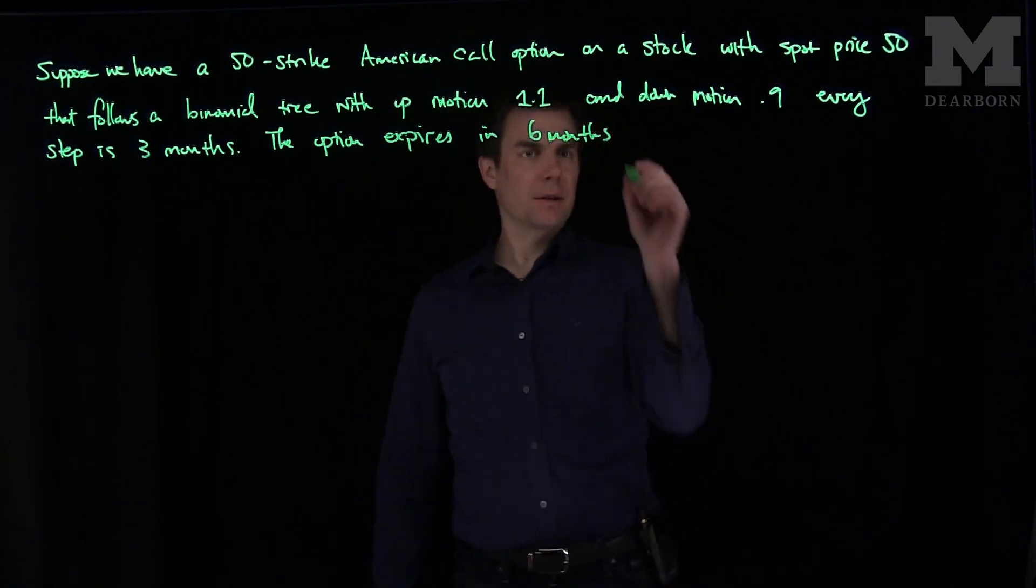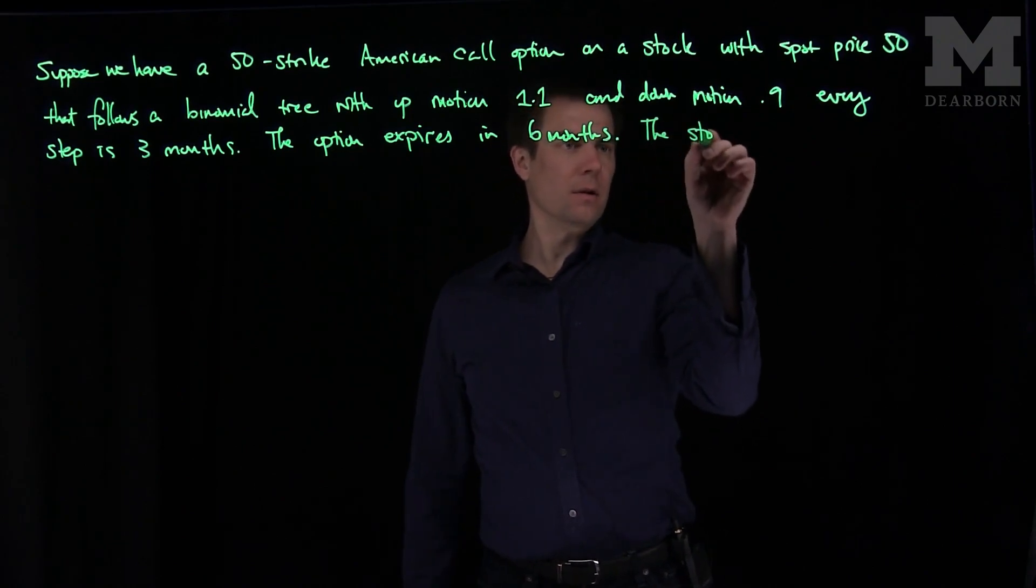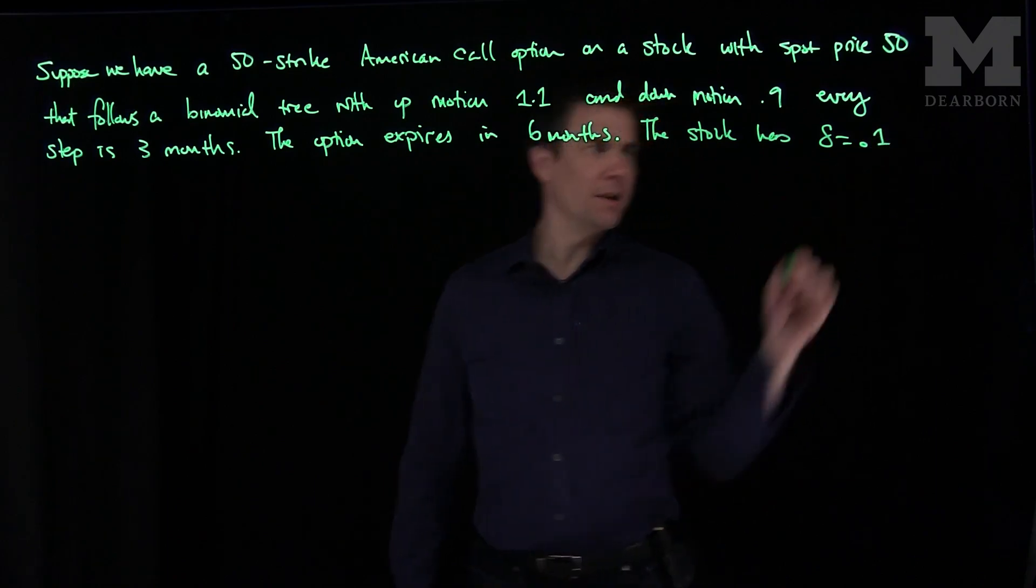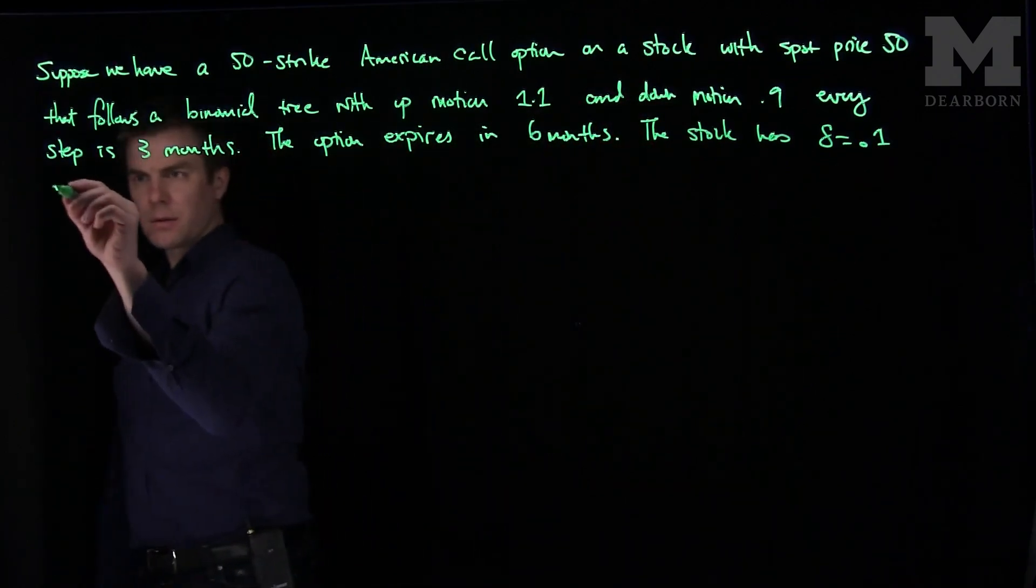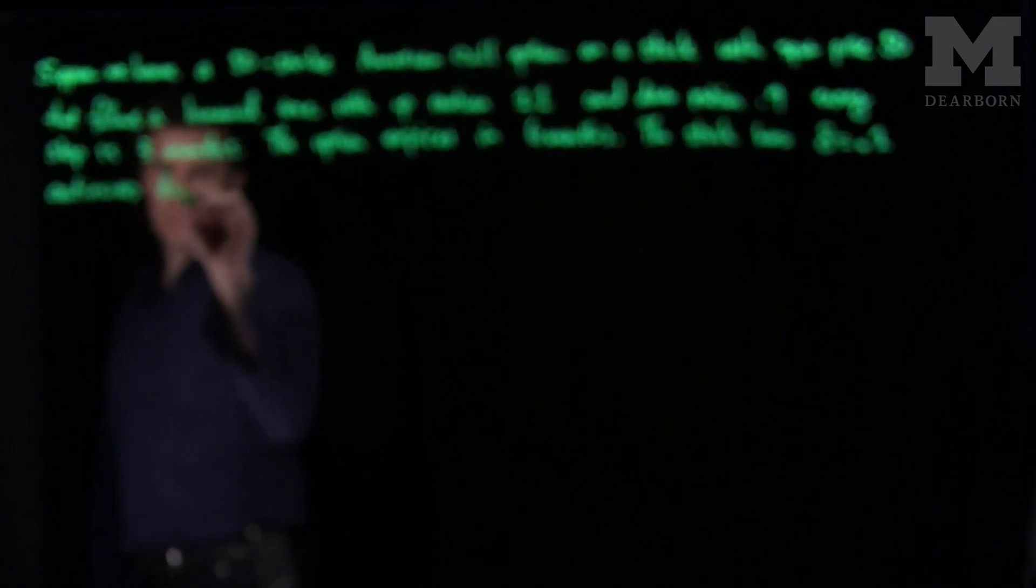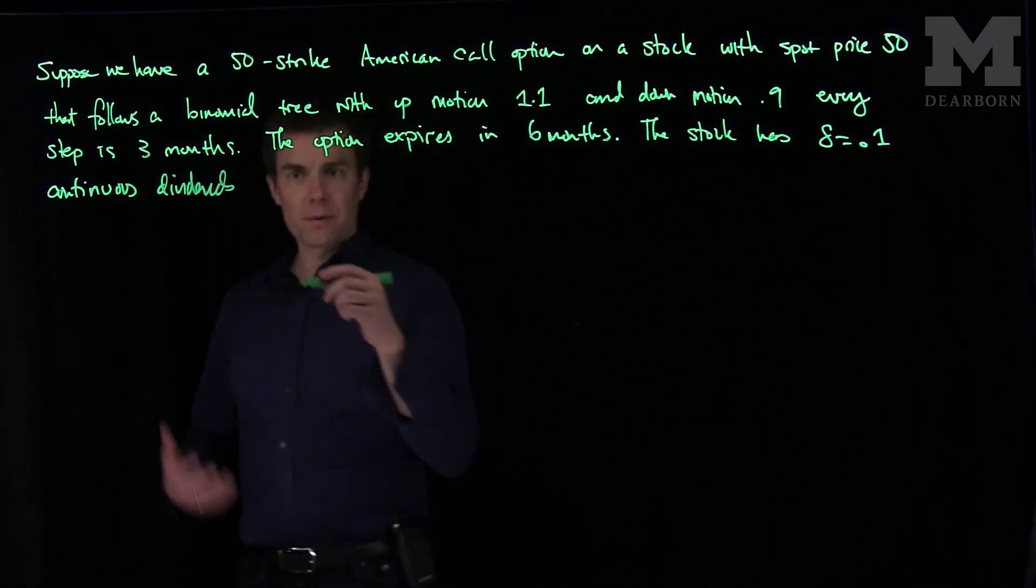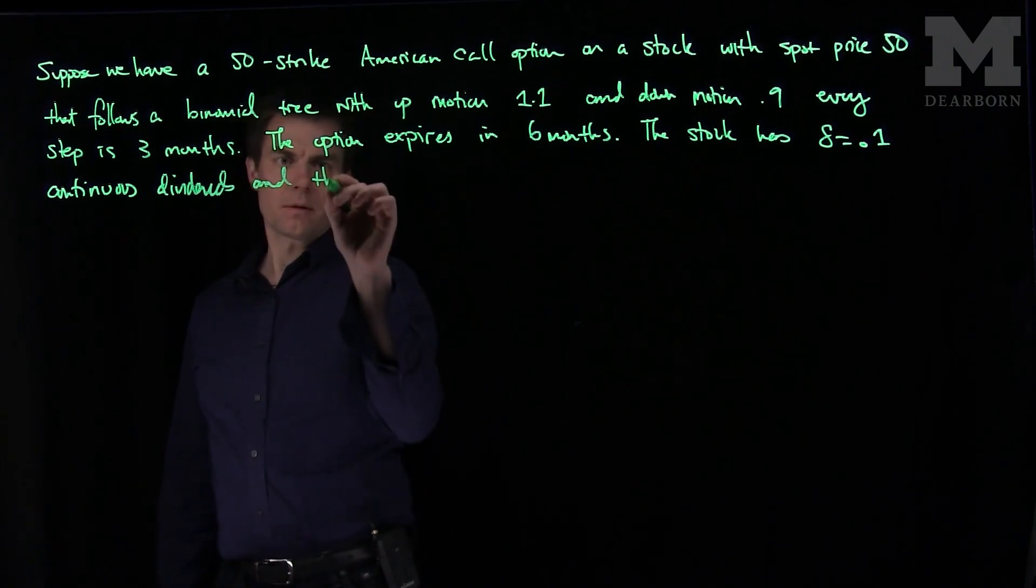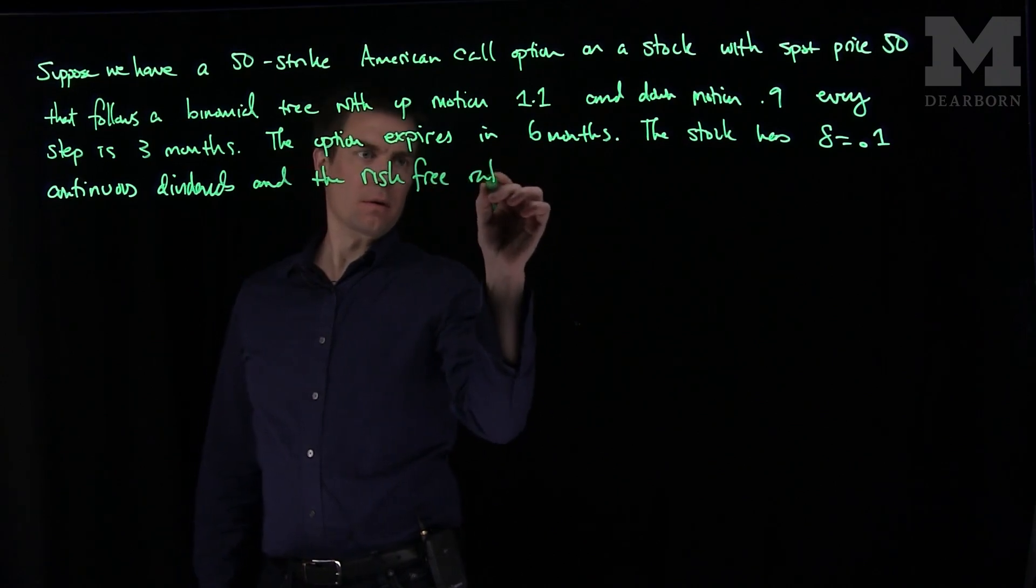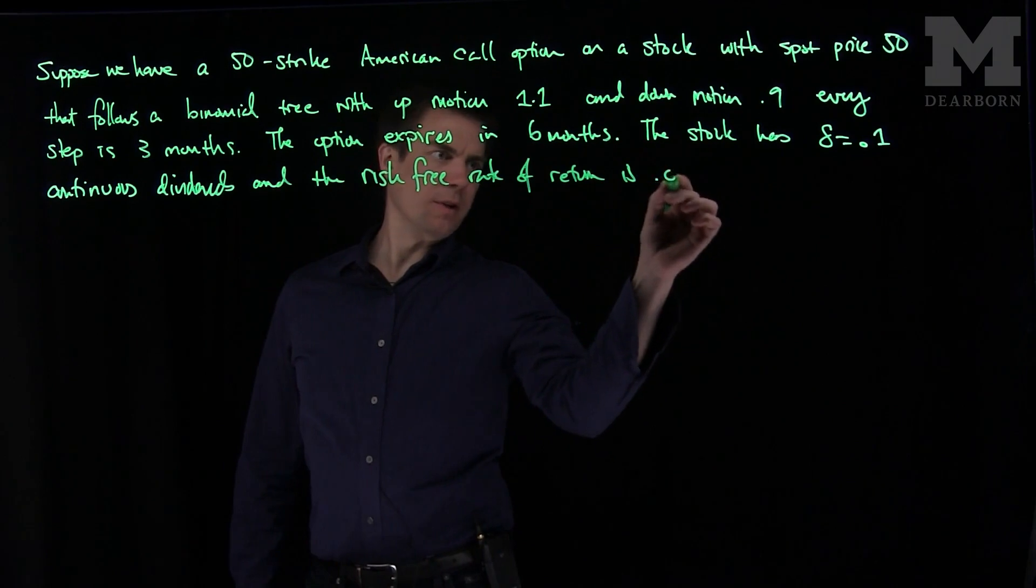The option expires in 6 months. The stock has delta equals 0.1 continuous dividends, and the risk-free rate of continuous return is 0.05.